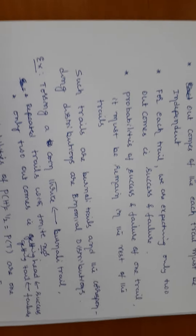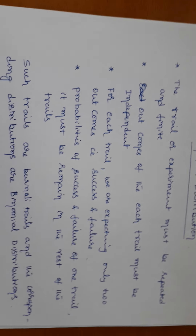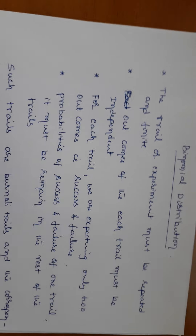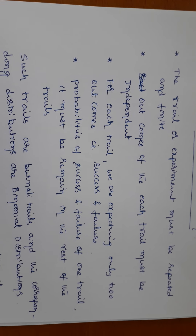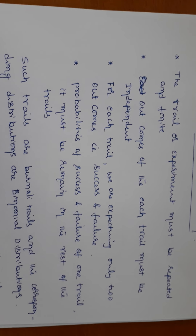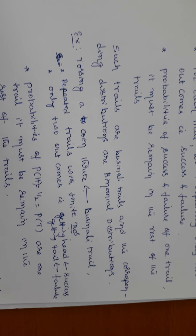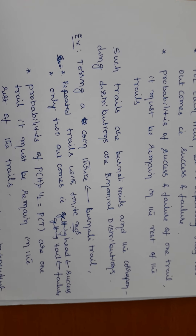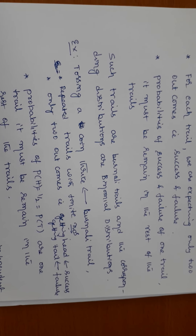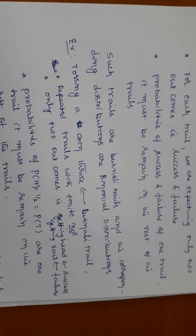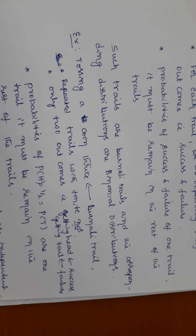Such repeated finite trials are called Bernoulli trials, and the corresponding distribution is called Bernoulli or binomial distribution. For example, consider tossing a coin three times. We repeat the same trial three times — that is finite and countable — so we treat it as a Bernoulli trial.